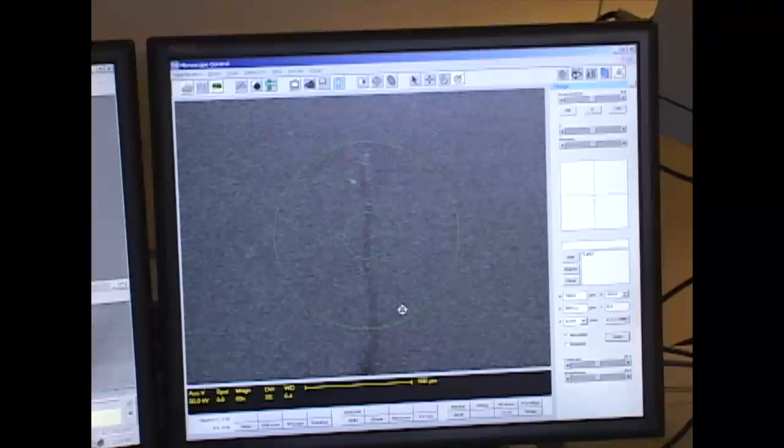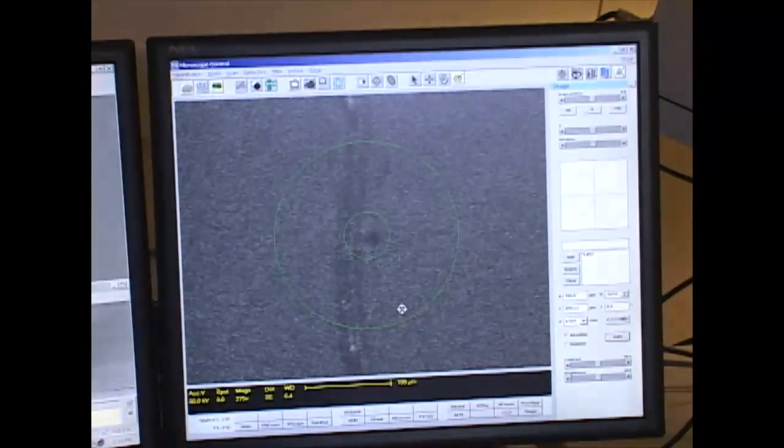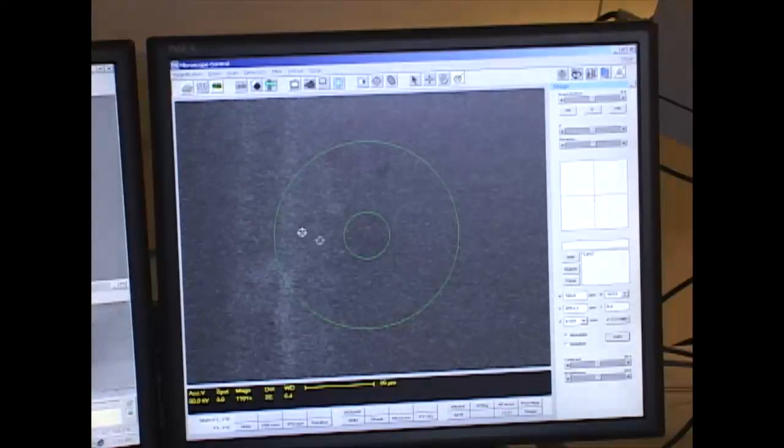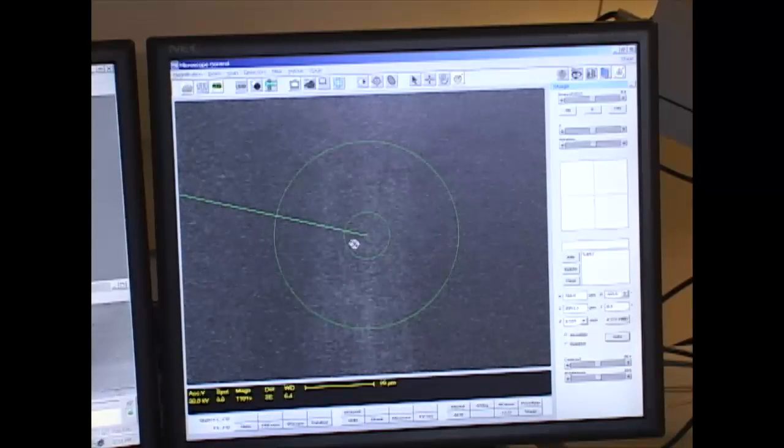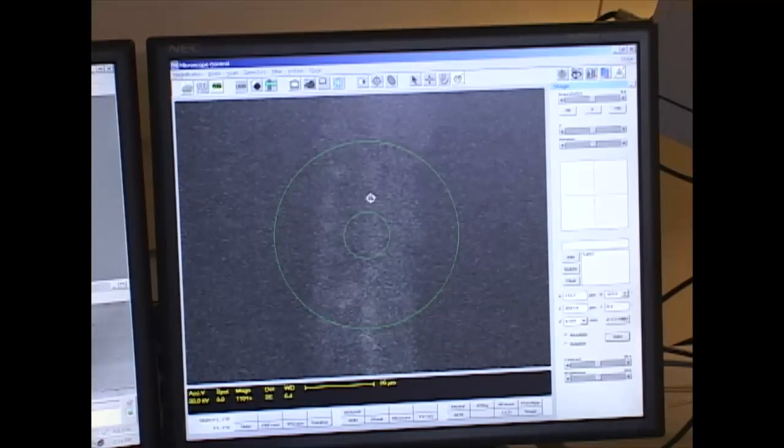This is corner number one, you can see I've scribed the number one through the resist layer here. I zoom in on it, you see that it's out of focus. I don't actually want to focus this in the normal way. What I want to do instead is raise the stage up until this comes into focus.